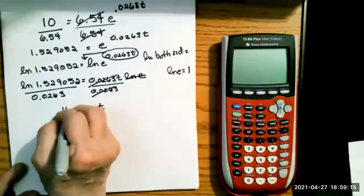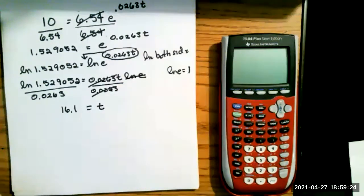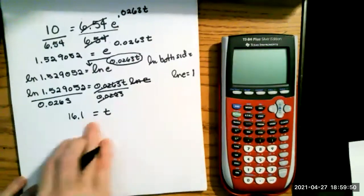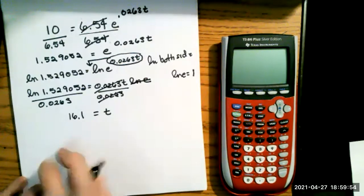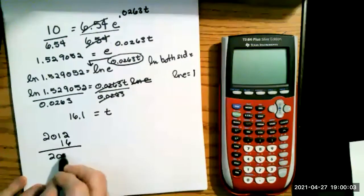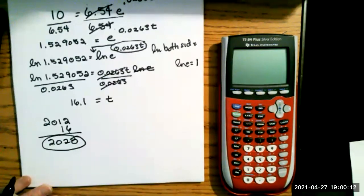T equals 16.1 years. The question asks 'when,' so we need the year, not just years elapsed. We drop the decimal and use 16 whole years. Our starting year was 2012, so 2012 plus 16 equals 2028. The population will reach 10 million in the year 2028.